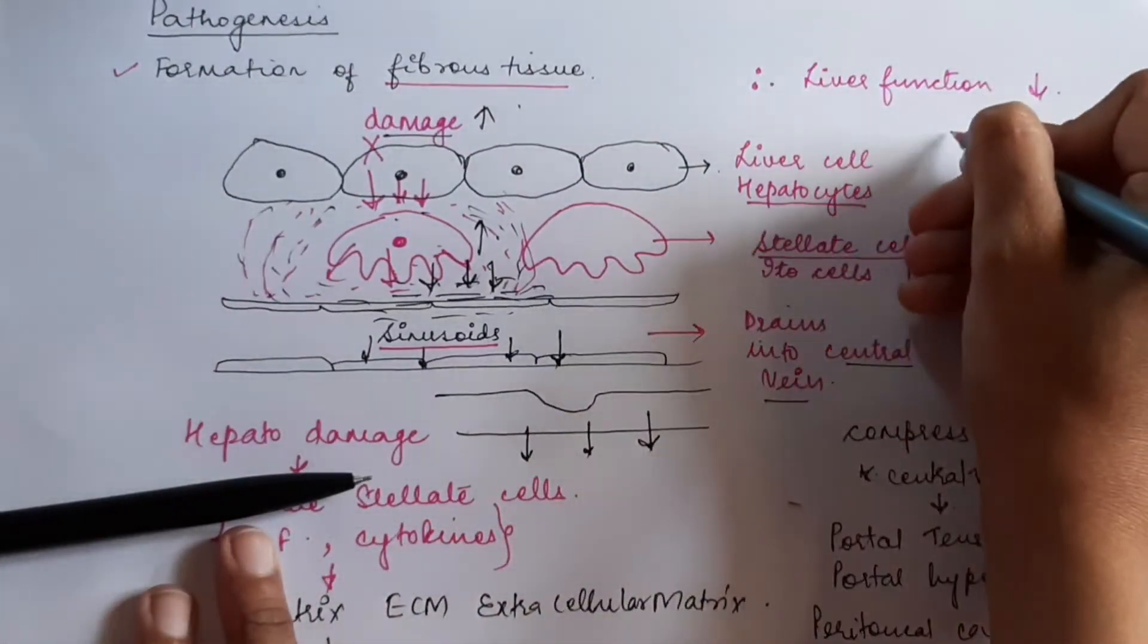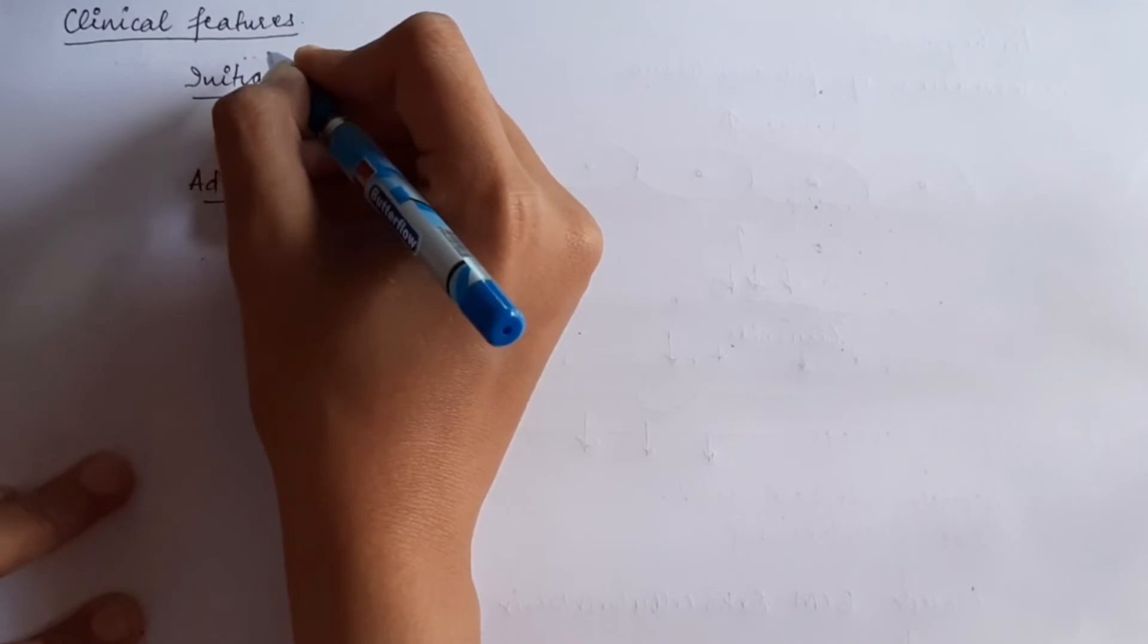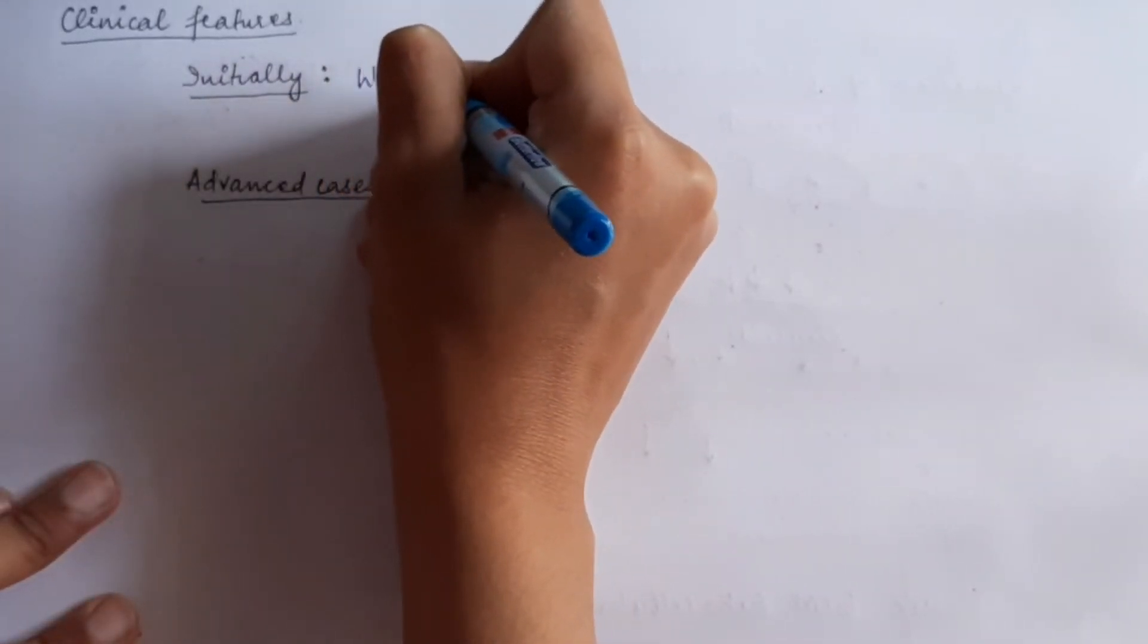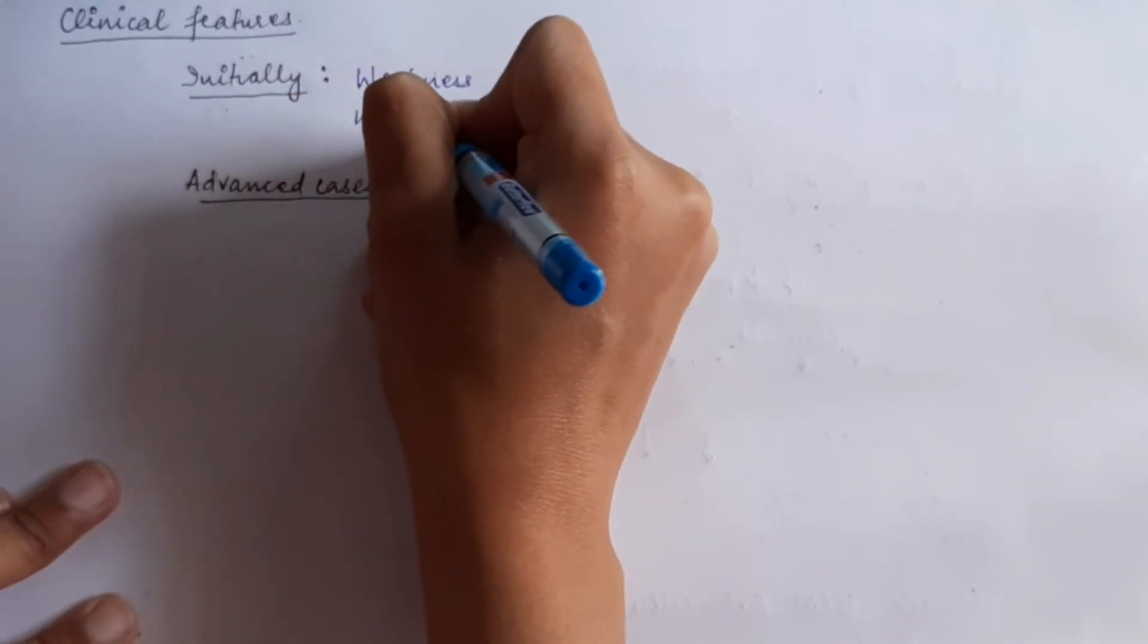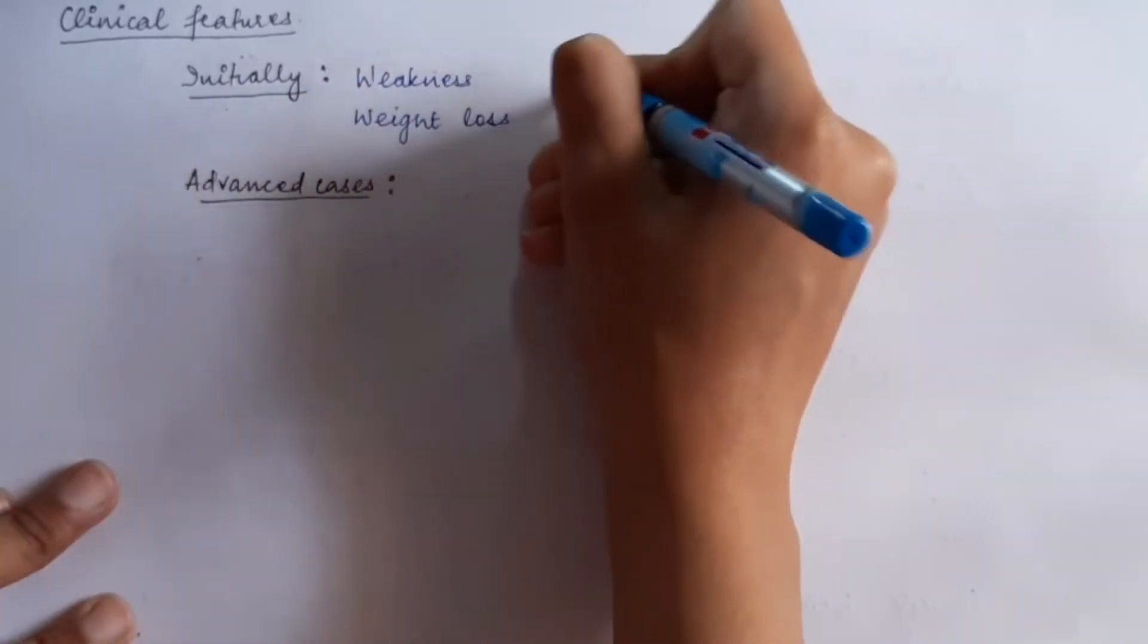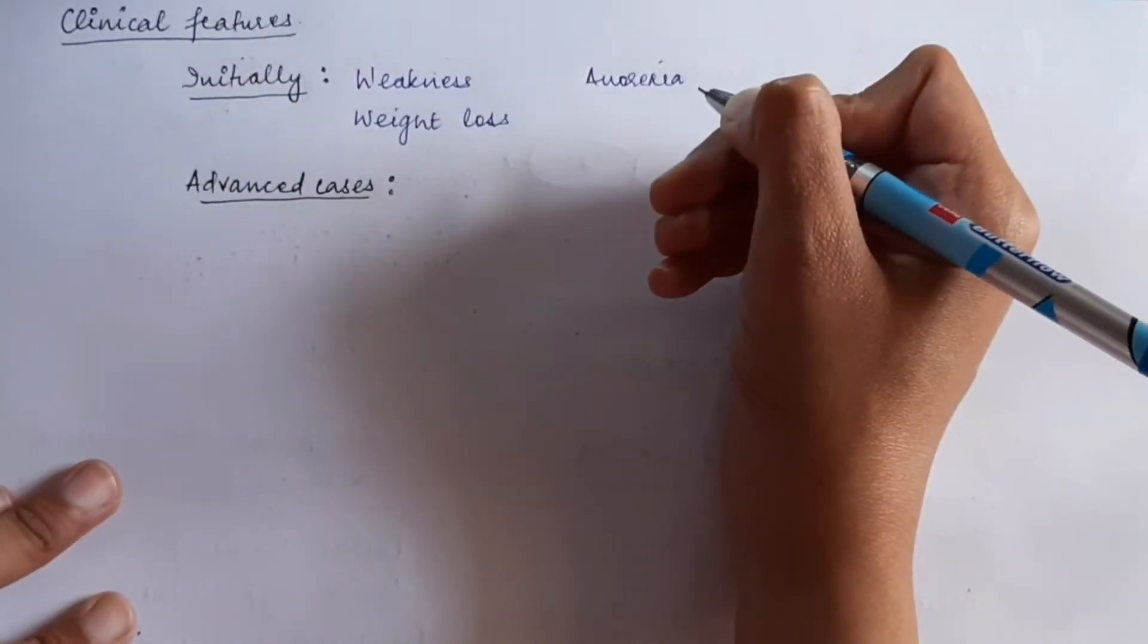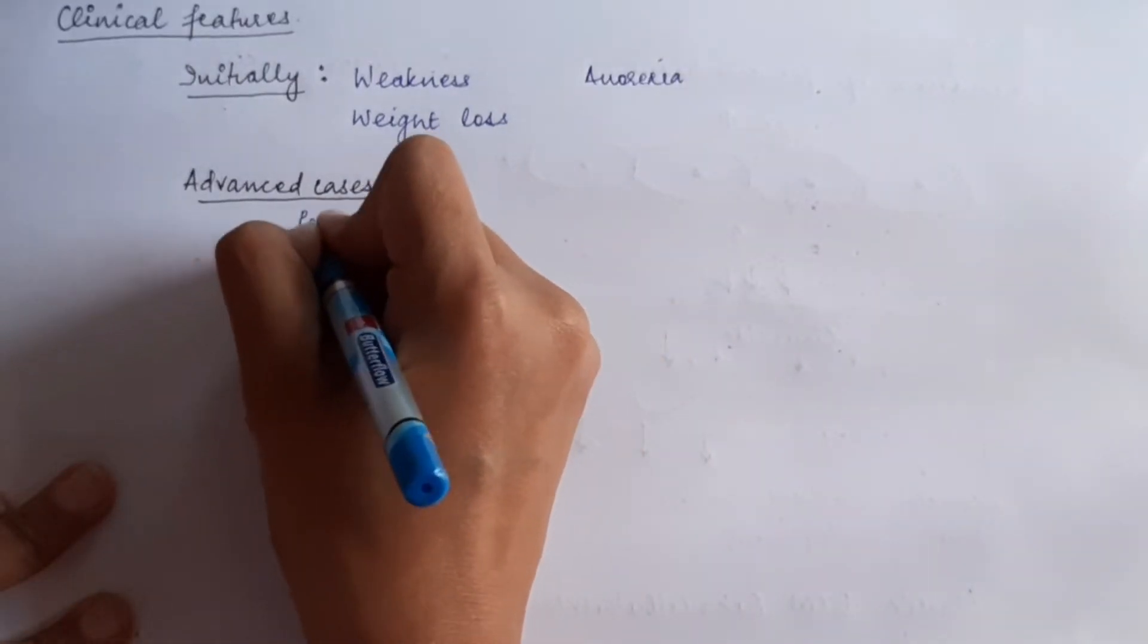Now, we will see the clinical features of the disease. In clinical features, initially, we will see the person will feel weakness, weight loss, anorexia, and gradually,